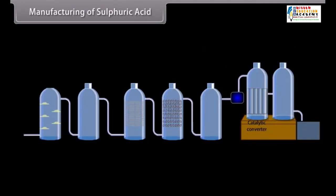Manufacturing of Sulphuric Acid. The manufacturing of Sulphuric Acid starts from Sulphur burner. Here, Sulphur dioxide is produced. This Sulphur dioxide passes through dust precipitator, which removes dust from the gases. A scrubber is used to remove the soluble impurities.